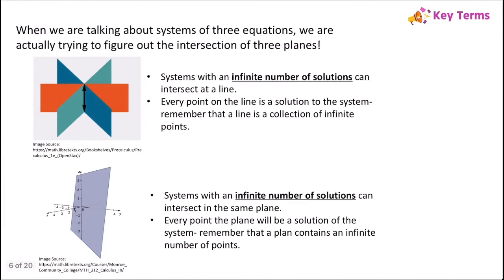We can also have systems that have infinite solutions. If all three planes intersect at a line, that line is going to contain every point that's a solution to the system. Since lines have an infinite number of points, we're going to have infinite solutions. You can also have a system that intersects in the same plane, meaning every point in that plane is a solution — and a plane is an infinite collection of points, so that also gives us infinite solutions.